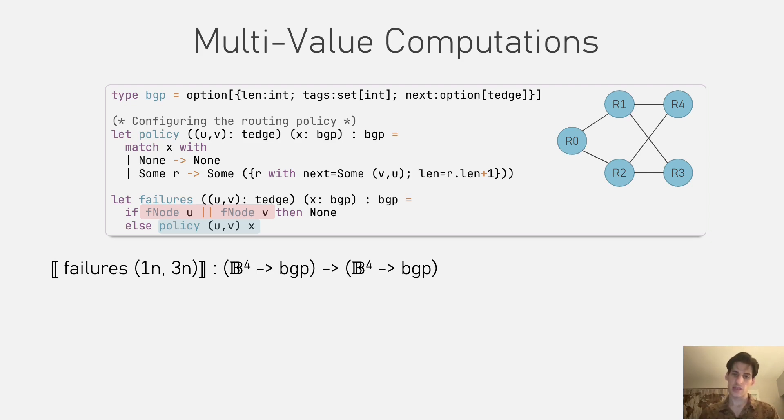When applied to an edge, the function failures returns a function that takes as input a multivalue and returns another multivalue.